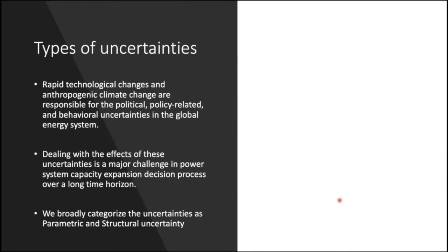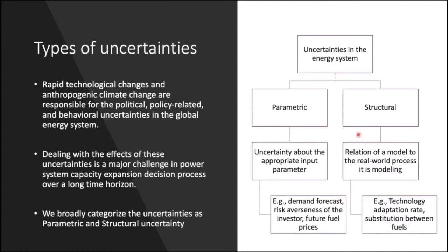There are two types of uncertainties. The first is parametric uncertainty, which arises from the fact that some coefficients in our optimization model — such as cost coefficients, constraint coefficients, or the right-hand side of constraints — can be uncertain due to uncertain demand projections, uncertainty in fuel prices, investment cost, or policy uncertainty. The second type is structural uncertainty, which arises from the fact that we cannot exactly model real-world processes. In the next lecture we'll cover structural uncertainty, but in this lecture we focus only on parametric uncertainty.